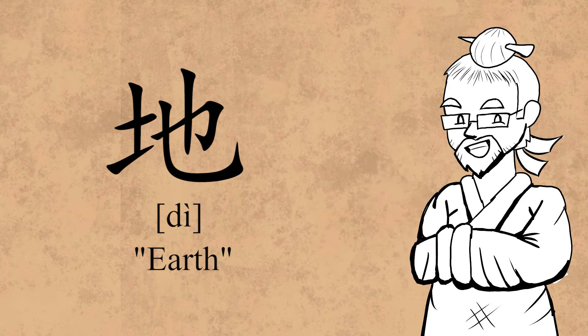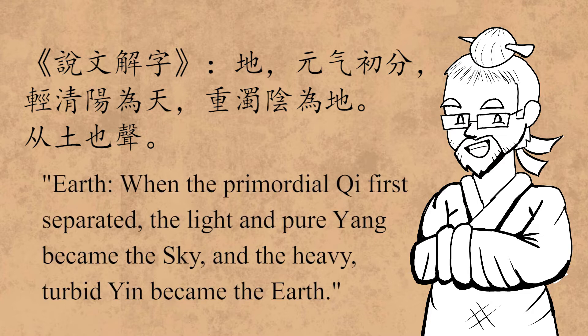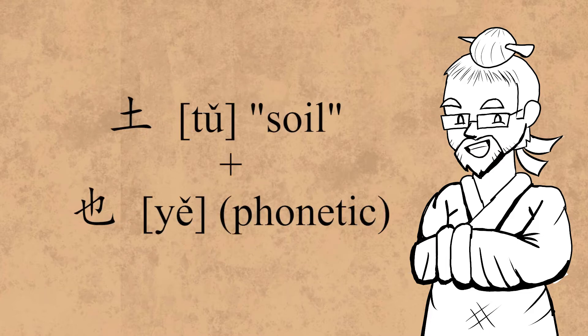Like last time, let's see what 说文解字 has to say first. 地: 元气初分，轻清扬为天，重浊沉为地，从土也声。 Earth: when the primordial qi first separated, the light and pure yang became the sky, and the heavy turbid yin became the earth, analyzed as from 土 (soil) plus 也 (phonetic).